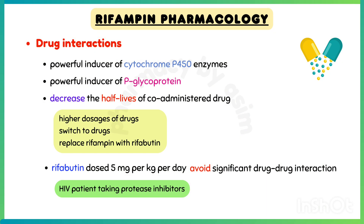Rifabutin, dosed at 5 mg per kg per day, can replace rifampin to avoid significant drug-drug interactions — for example, in HIV patients taking protease inhibitors.